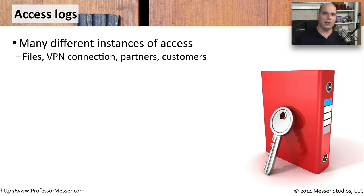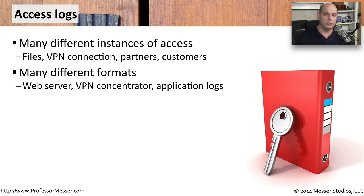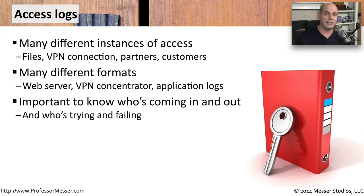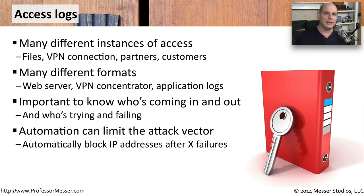An access log is going to tell us when somebody gains access to a resource — they may be gaining access to a file server or logging in to use a VPN. This can come from web servers, VPN concentrators, or applications that store log information when somebody logs in and gains access to certain types of data. This can be very useful to tell who's gaining access, but it can also tell us who's not getting access. If somebody is constantly trying the same username but the wrong password to access a VPN over and over again, you'll see that in your access log. This way, you can start to limit the attack vectors available.